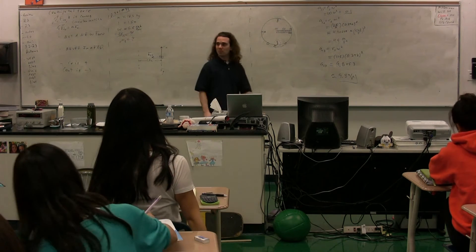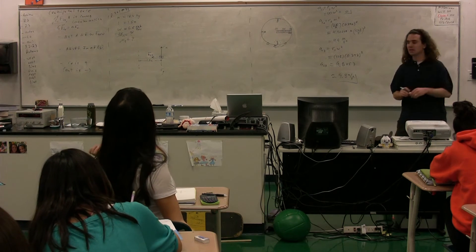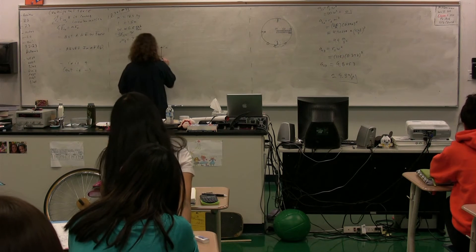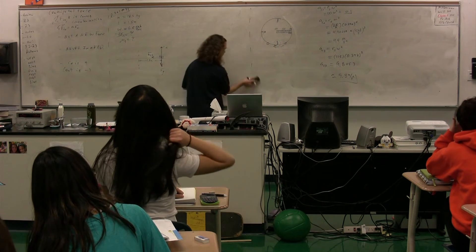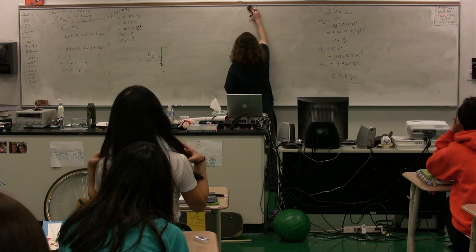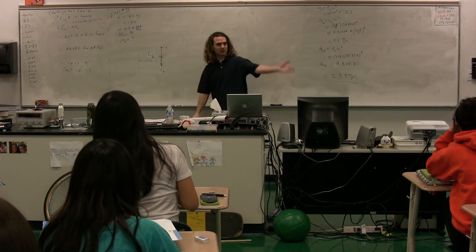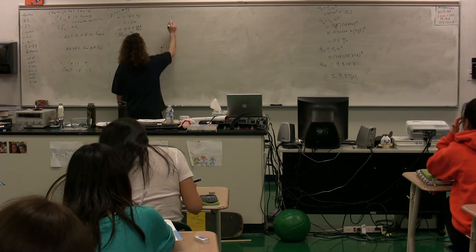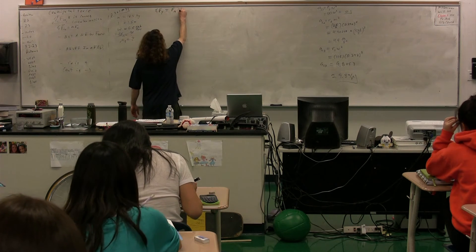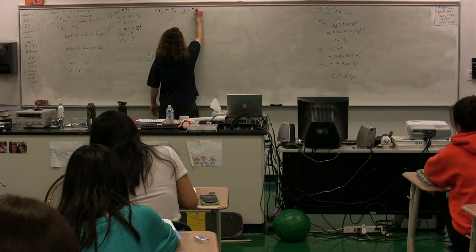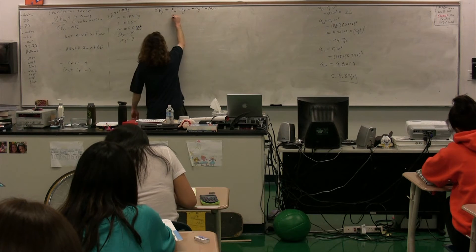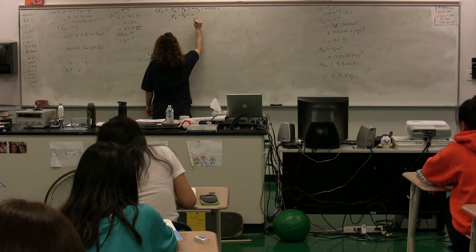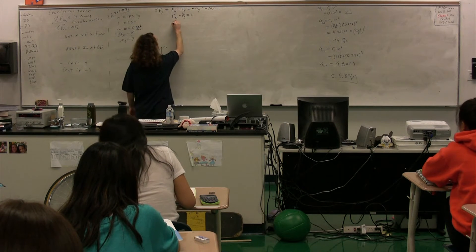We don't need to redraw the free-body diagram. So what is our next step? Sum the forces in the y-direction: force normal minus force of gravity equals mass times acceleration in the y-direction. The acceleration in the y-direction is zero, so force normal minus force of gravity equals zero, therefore force normal equals force of gravity, which equals mass times acceleration due to gravity. Do we know the mass of the dog? Yes, but we're not going to plug in the mass yet.